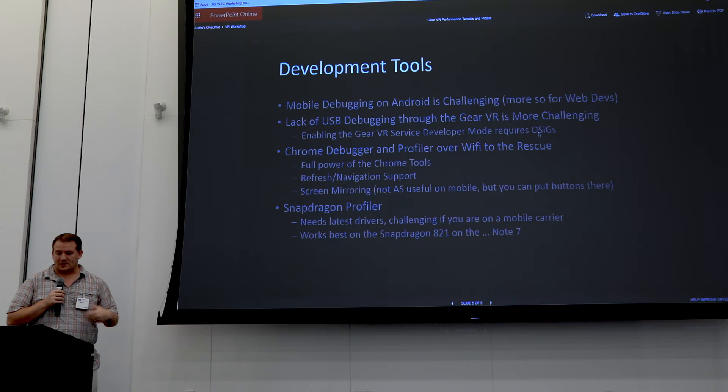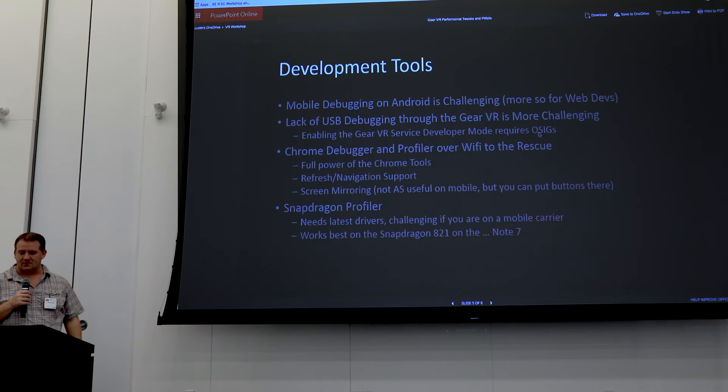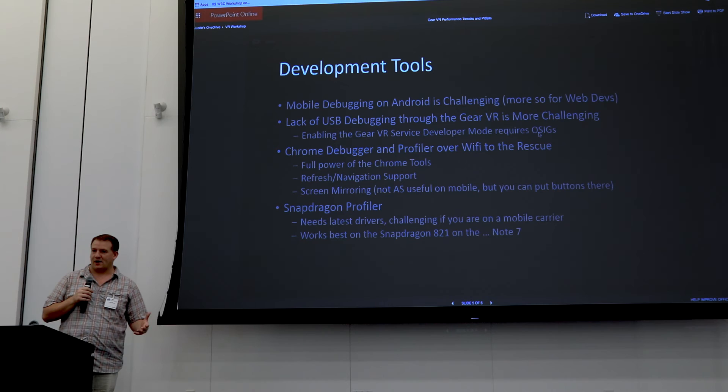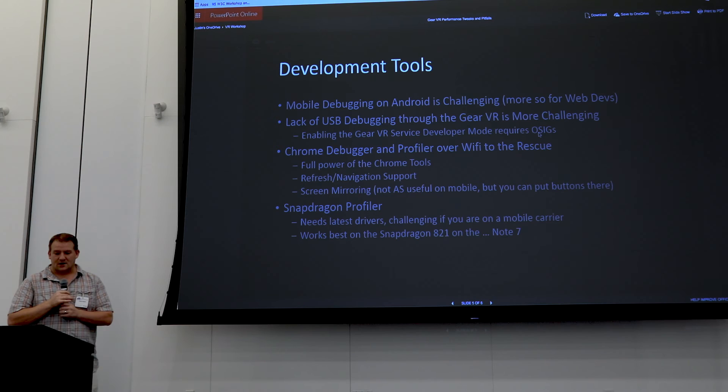Development tools are a big challenge. Mobile debugging on Android is generally difficult, and the lack of USB debugging through the Gear VR was the most challenging for us — you can't put the phone in the headset and debug at the same time. You can do it over Wi-Fi instead. We also found that enabling the Gear VR service developer mode requires an O6 device, which web developers don't have, and we're going to talk to Samsung about fixing that.